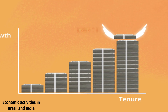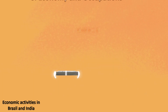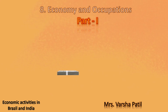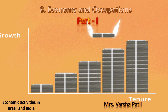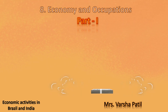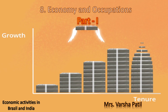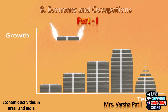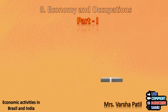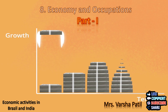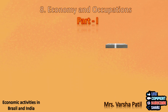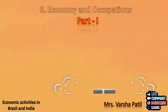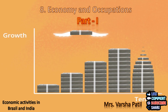Welcome back students to Chapter 8: Economy and Occupations, Part 1. Today we will study economic activities in Brazil and India. We will also understand what we mean by GDP, GNI, and how to calculate per capita income. Along with this, we will also prepare the polyline graph that they have asked us to prepare on page number 53.